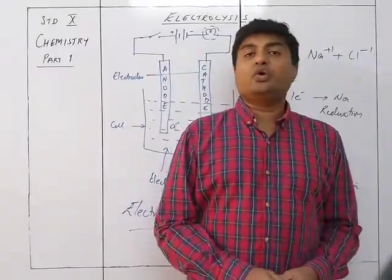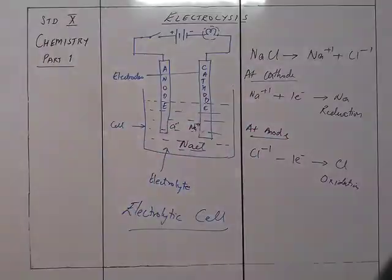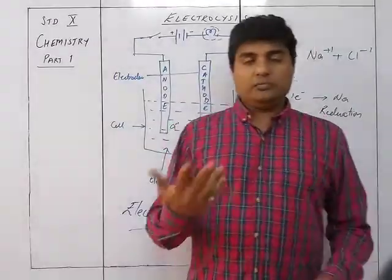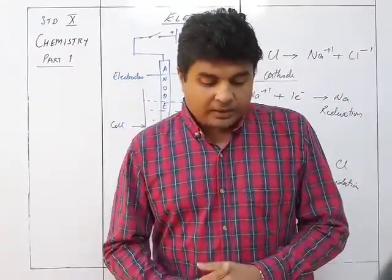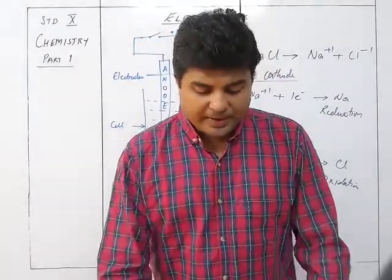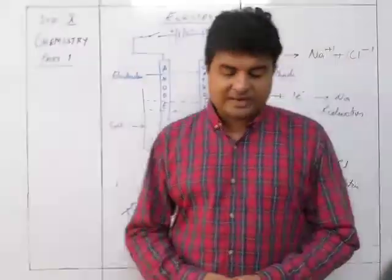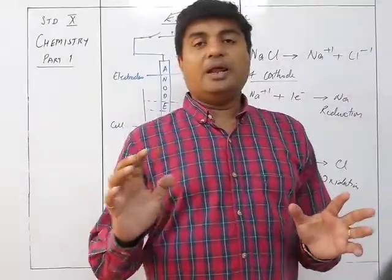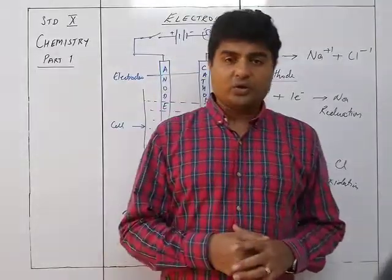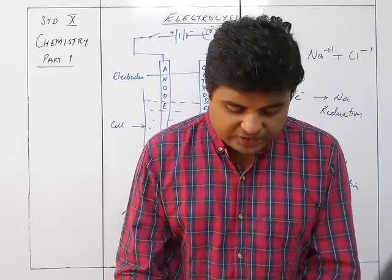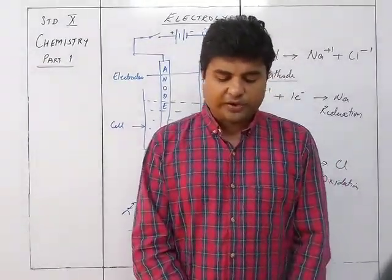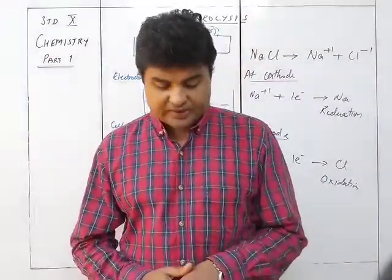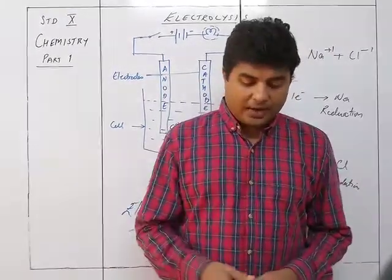Electrolytes can be further divided into strong electrolytes and weak electrolytes. Strong electrolytes allow a large amount of electricity to flow and are good conductors, while weak electrolytes allow only a small amount of electricity and are poor conductors. Strong electrolytes are almost completely dissociated in fused or aqueous solution, whereas weak electrolytes are only partially dissociated. Particles in strong electrolytes are mainly ions only, while in weak electrolytes they are ions and unionized molecules.